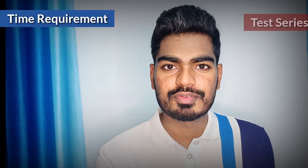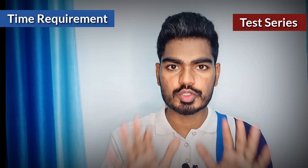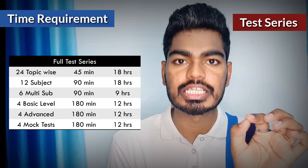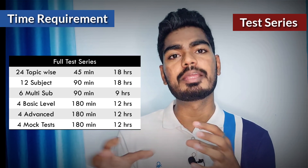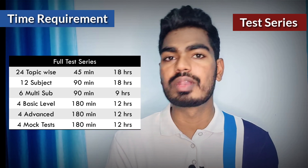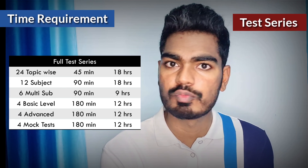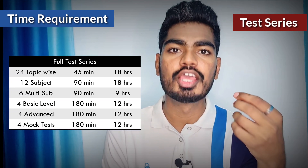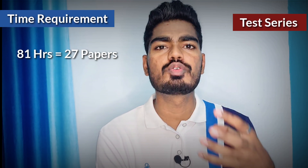For the test series, taking Made Easy as an example: there are 24 topic-wise tests of 45 minutes each, 12 subject-wise tests of 90 minutes each, six multiple-subject tests of 90 minutes each, four basic-level full-length tests of 180 minutes, four advanced tests of 180 minutes, and four mock tests of 180 minutes. The net requirement to complete a full test series is equivalent to 27 tests. At six hours of question solving and three to four hours for analysis per day, you can solve two papers a day, meaning 27 papers require roughly 15 days.